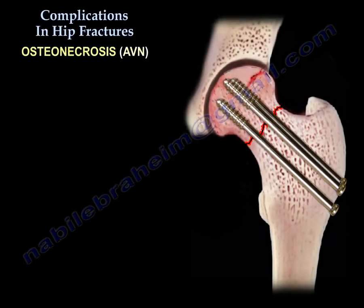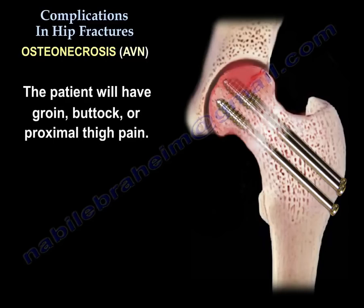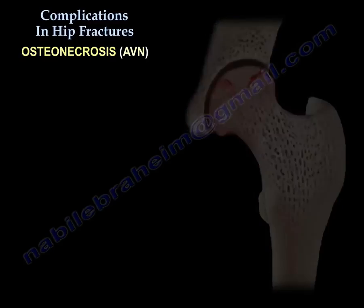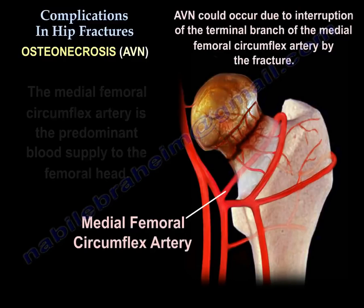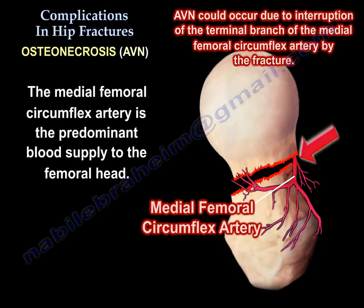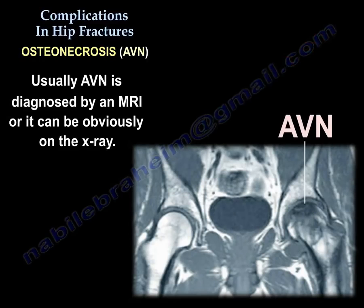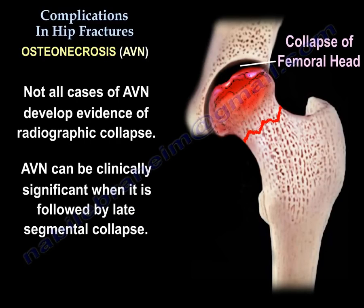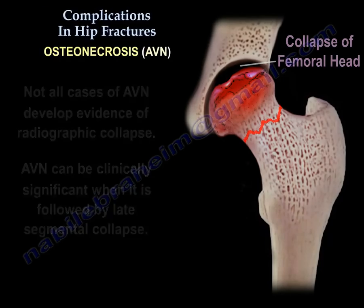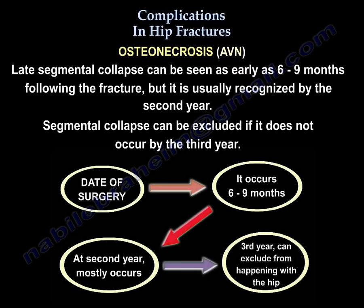Another complication is osteonecrosis or AVN. The patient will have groin, buttock, or proximal thigh pain. It occurs in 10% of non-displaced fractures and 30% of displaced fractures. The medial femoral circumflex artery is the predominant blood supply to the femoral head. AVN is diagnosed by MRI, or if obvious, it can be seen on X-ray. Not all cases develop radiographic collapse — AVN alone is not clinically significant unless late segmental collapse occurs. Late segmental collapse can be seen as early as six to nine months but is usually recognized by the second year, and can be excluded if it does not occur by the third year.